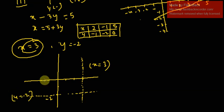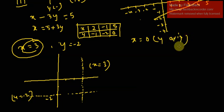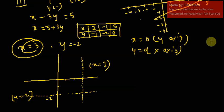For x equals 0: the value of x is zero at every point on the y-axis, so x equals 0 is the y-axis itself. For y equals 0: the value of y is zero at every point on the x-axis, so y equals 0 is the x-axis itself.